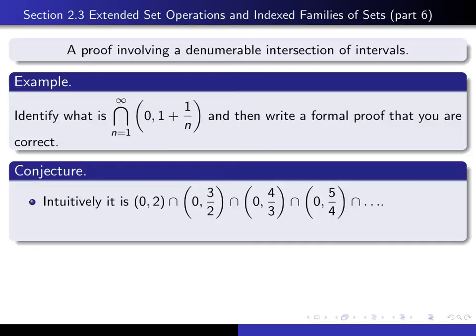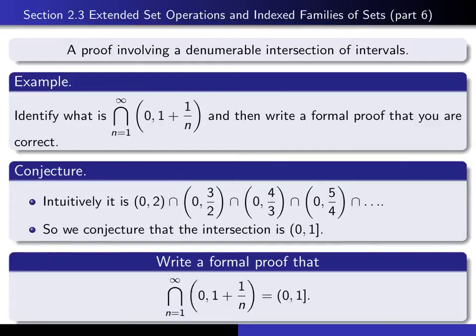Therefore, we would expect that the intersection of all these intervals is going to be the interval from 0 to 1, where we don't include 0, but we do include 1. So there is our conjecture. We know in our heart that has to be correct, but that doesn't make it true. When we write up the proof, we'll find that the actual proof has nothing in common at all with what we did in coming up with our conjecture.